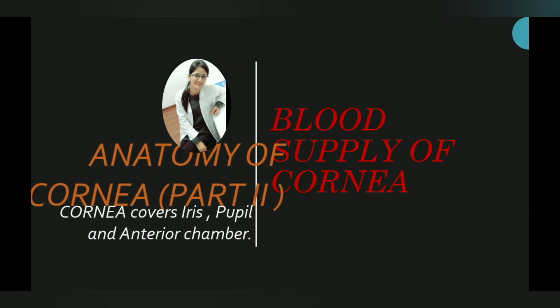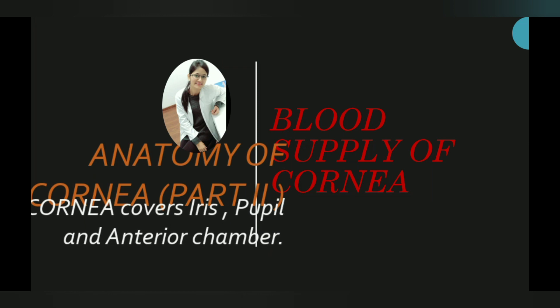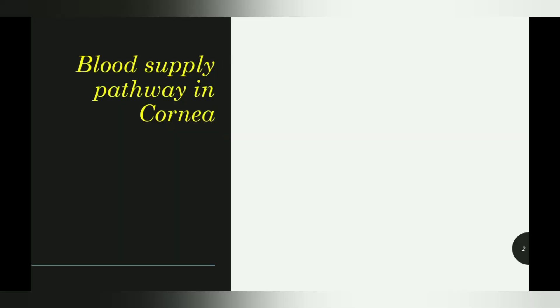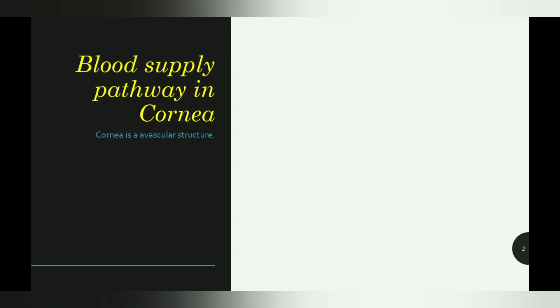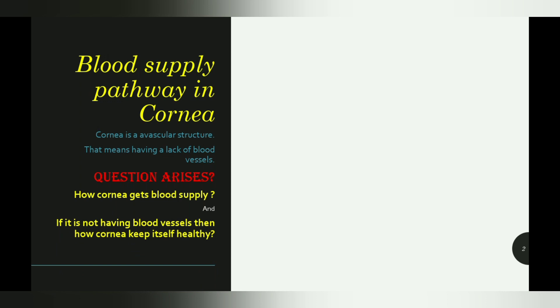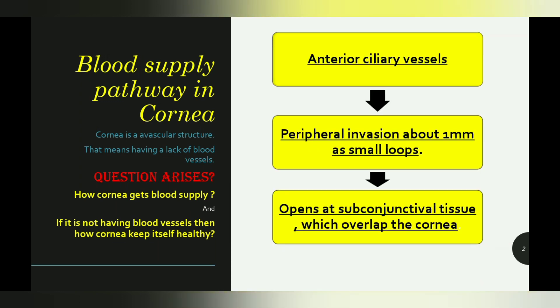As you have to know, the cornea covers the iris, pupil, and anterior chamber. The cornea is an avascular structure, meaning it lacks blood vessels. This raises the question: how does the cornea get blood supply in the absence of blood vessels, and how does it keep itself healthy?